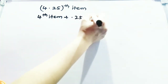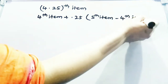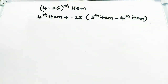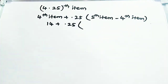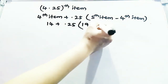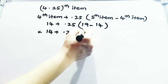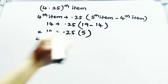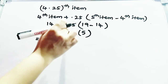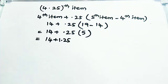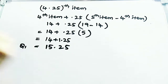Your 4th item is 14 and your 5th item is 19. So Q1 = 14 + 0.25 × (19 − 14) = 14 + 0.25 × 5 = 14 + 1.25 = 15.25. That is your Q1 value.